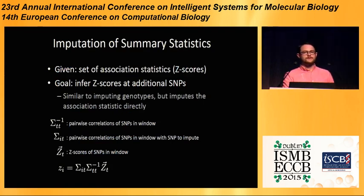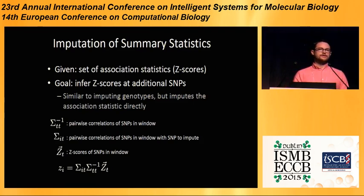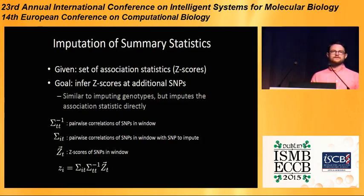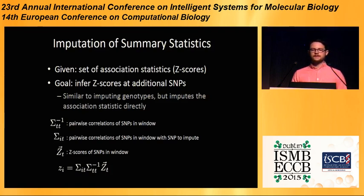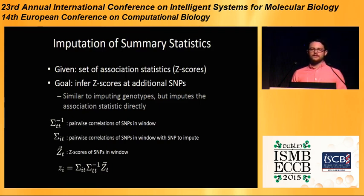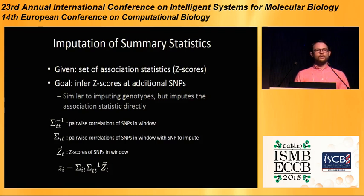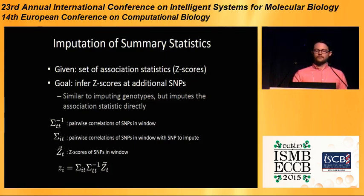If you're not familiar with imputation of summary statistics: given a set of association statistics at genotyped SNPs, we want to infer the z-scores at additional SNPs. This is like imputing genotypes against a reference panel, but instead of imputing the genotypes — since we don't have access to the genotype data — we impute the association statistic directly. In order to do this, you need to know the pairwise correlations of the SNPs in the window that you've measured, the correlations of those to the SNP you're going to impute, and the z-scores of the ones you've measured. Then you can use a simple equation to estimate the z-score of the one you're imputing.